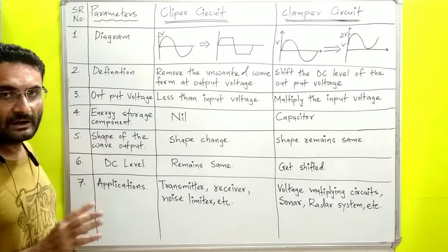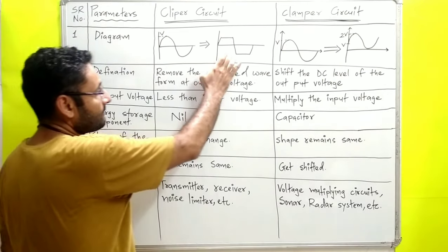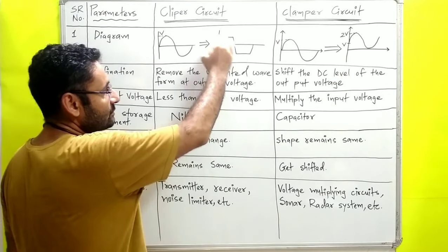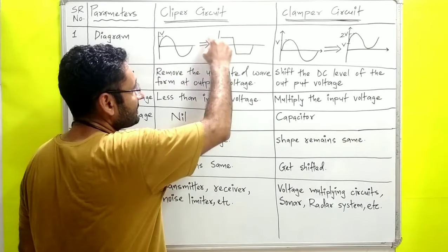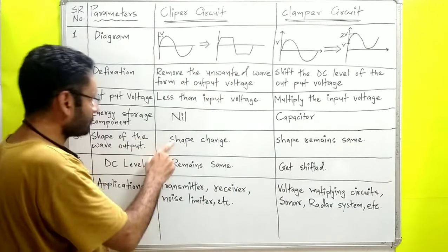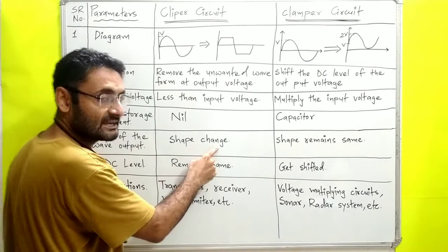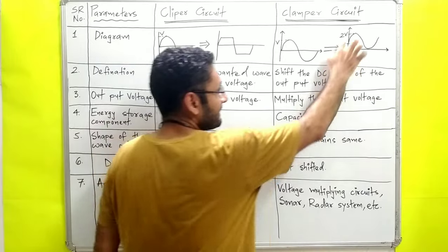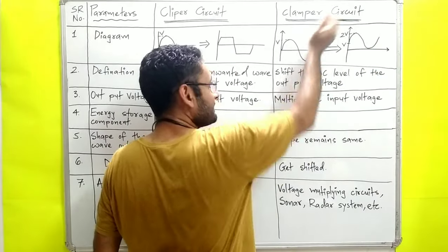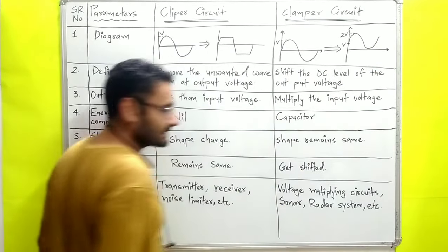Next, the shape of the wave output. In the clipper, the shape of the wave output is changing because portions are removed. In the clamper, the shape remains the same.